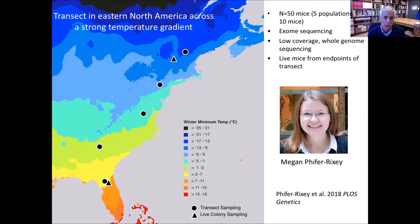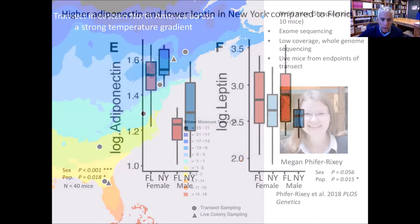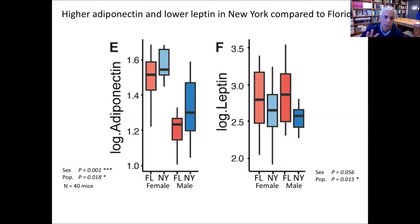Let me show you some of the genome scans we've done to try to find genes that might underlie those and other traits. This is work done by a former postdoc in my lab, Megan Pfeiffer-Rixey. I'll focus on five populations in eastern North America plus two from the ends of the transect where we have live animals. We've measured a variety of phenotypes in descendants of wild-caught animals in the lab, including many aspects of blood chemistry, and we see differences in almost anything that we measure.